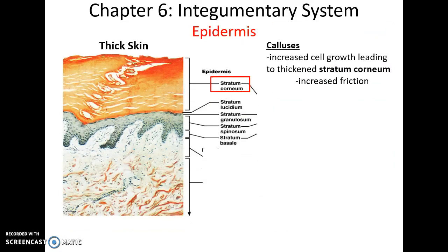Calluses are where a certain area of the skin has been stimulated to increase cell growth, which then leads to thickening of the stratum corneum because of increased friction to that area — whether it's a callus on your thumb from playing the guitar or from holding something against a part of your body regularly, leading to rubbing and friction.